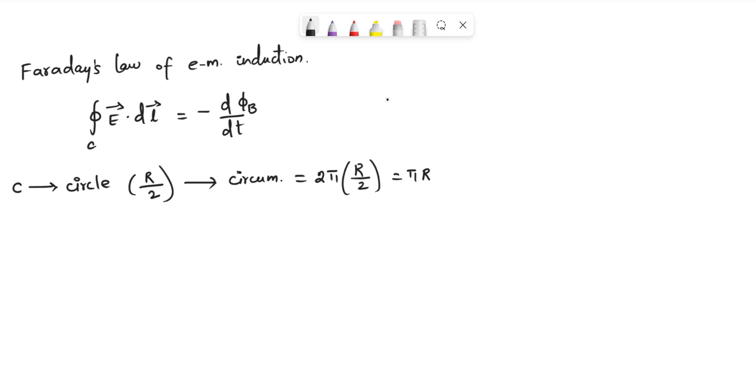And hence, the left hand side of the above equation can be written as E times pi r. And the right hand side can be written as minus d over dt of the product of the magnetic field and the area.